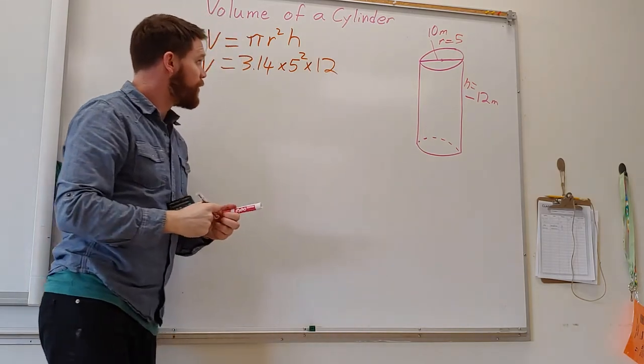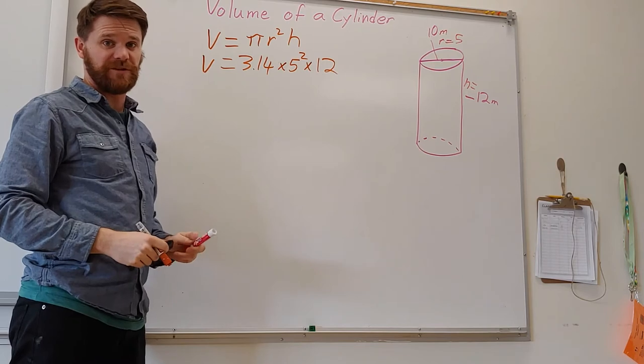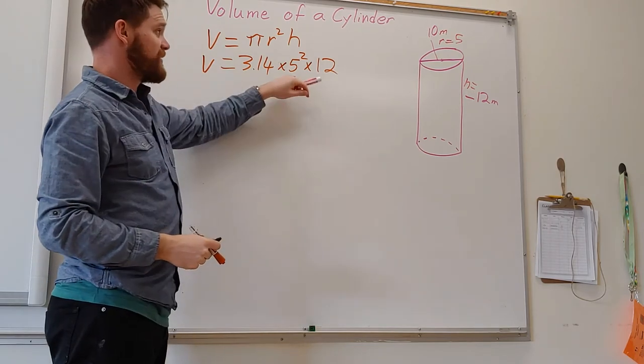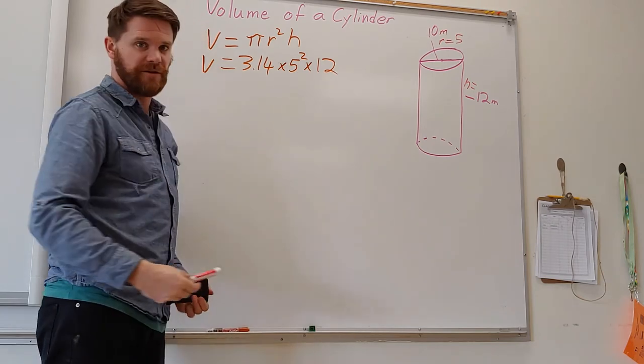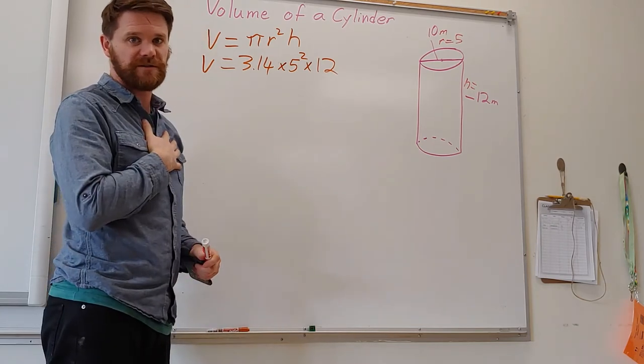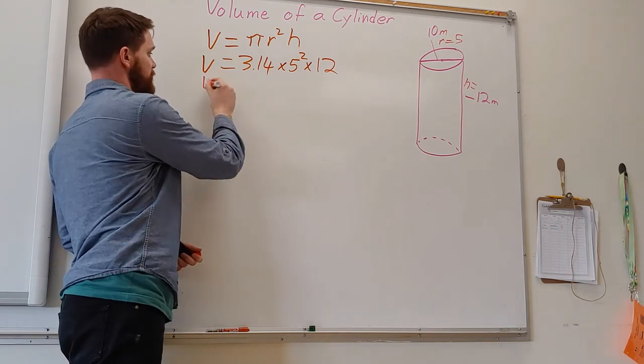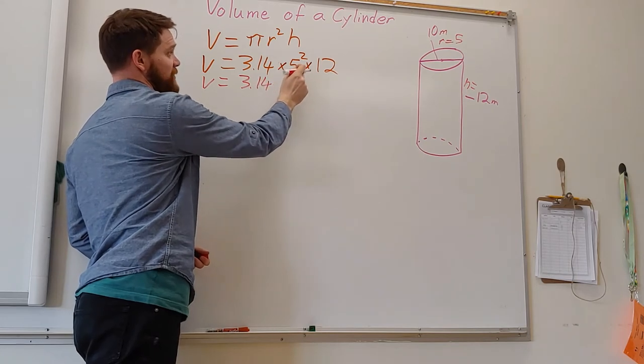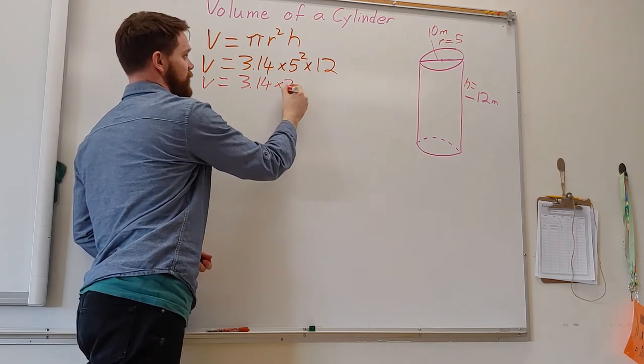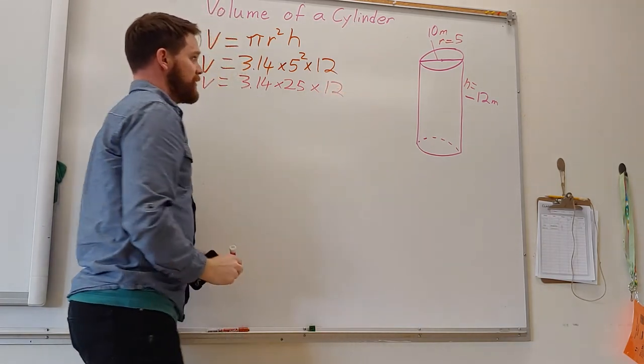So I want you to square this first before you move on to the last part. It's important you write all the steps down and it lets me know where you mess up and it lets you know where you mess up, if you do mess up. So volume equals 3.14 times 25, times 12, the height.